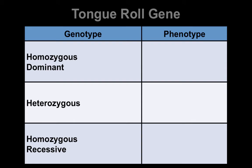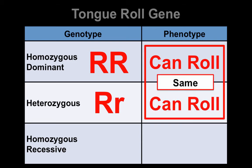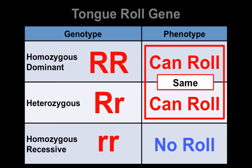Let's look at how genotype relates to phenotype. The homozygous dominant genotype, big R big R, gives you the dominant phenotype — you can roll your tongue. Heterozygous, big R little r, also means you can roll your tongue. Notice these are the same. Both homozygous dominant and heterozygous give you the same phenotype — just by looking, you can't tell the difference. Only homozygous recessive gives a different phenotype.